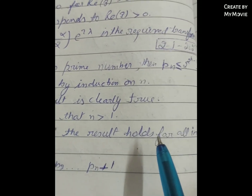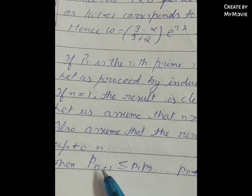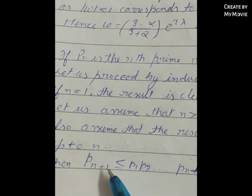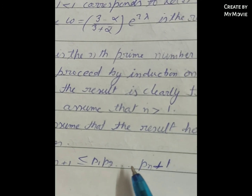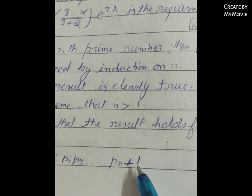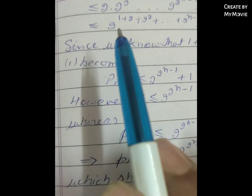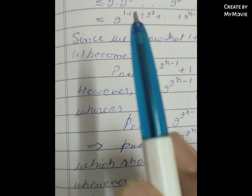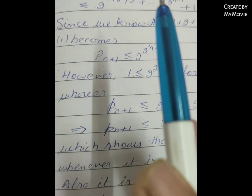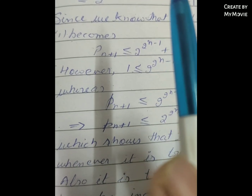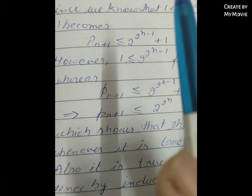Also assume that the result holds for all integers up to n. Then p(n+1) ≤ p(1) · p(2) · ... · p(n) + 1, which is less than or equal to 2^1 · 2^2 · ... · 2^(2^(n-1)) + 1.